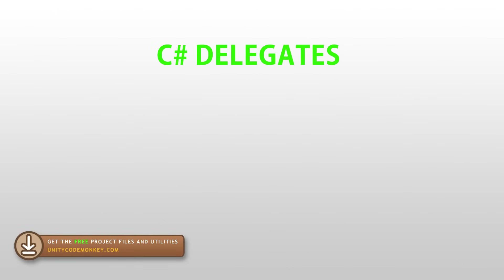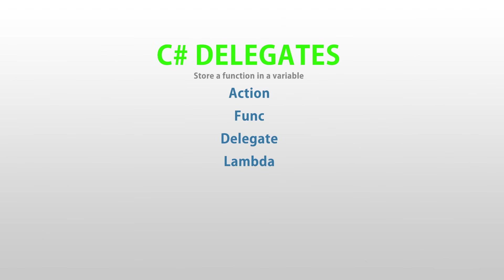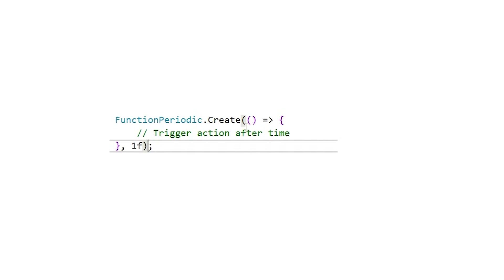Delegates are a very interesting C# feature. Essentially they allow you to store a function inside of a field, which is extremely powerful in many scenarios. You've seen me use delegates whenever I use one of the function classes from my utilities — for example, the function periodic, which triggers an action every certain amount of time. It uses a delegate to receive the function that will be triggered, so when you create the object you pass the behavior you want to trigger.